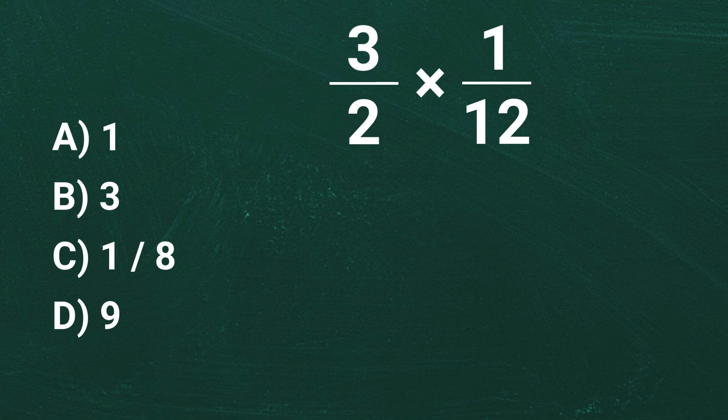But wait, before we multiply, let's see if we can simplify even more. We notice that 3 in the numerator and 12 in the denominator share a common factor of 3. So let's divide both by 3. 3 divided by 3 equals 1. 12 divided by 3 equals 4. Now our expression simplifies further to 1 over 2 times 1 over 4.